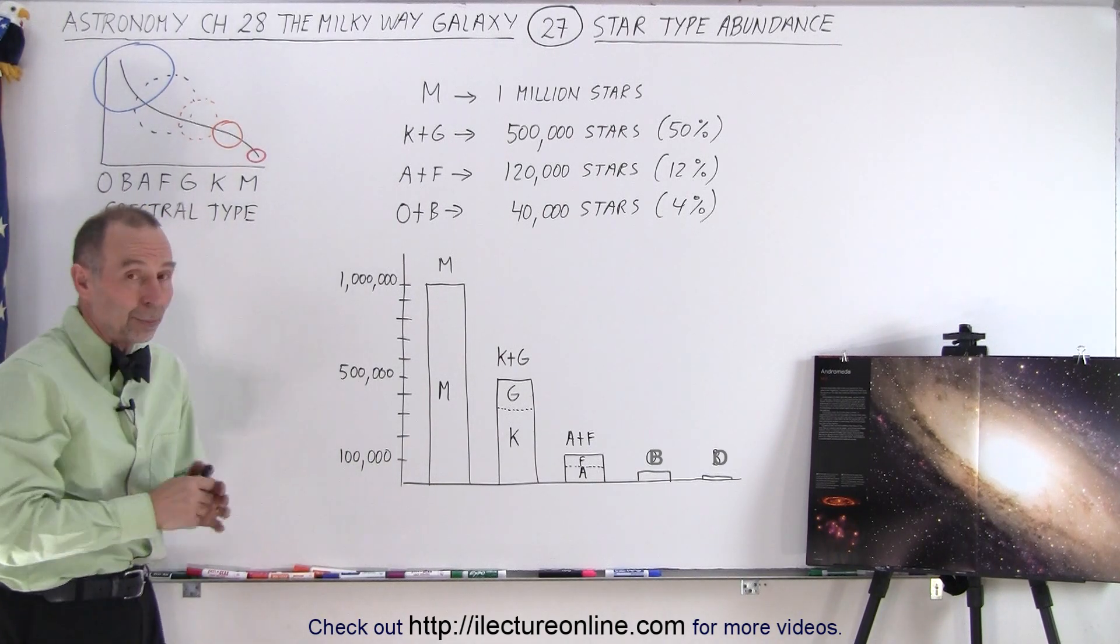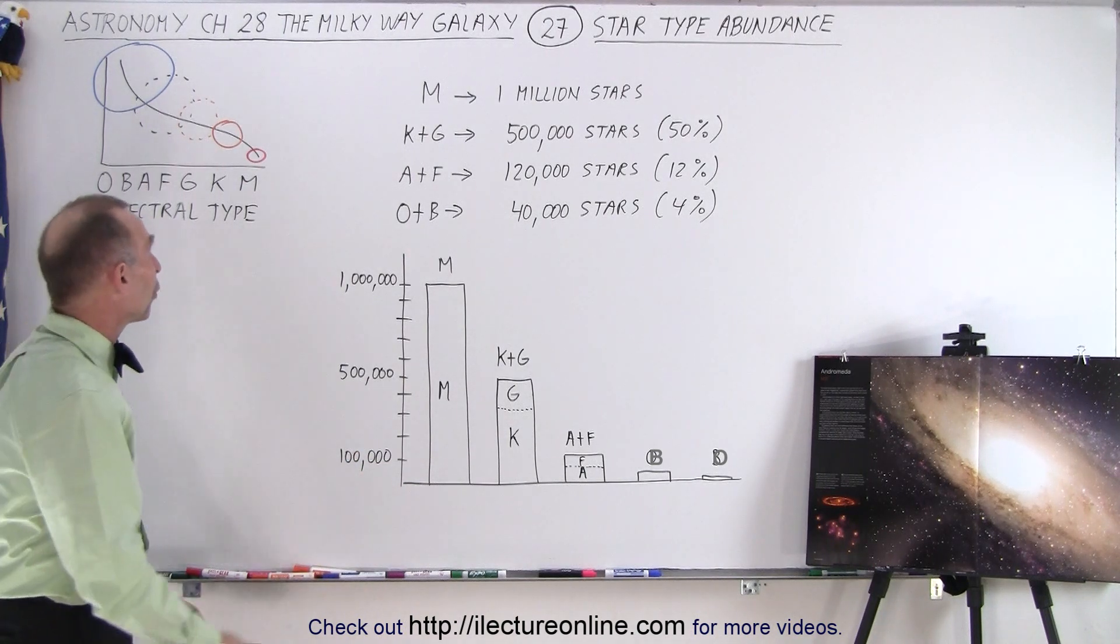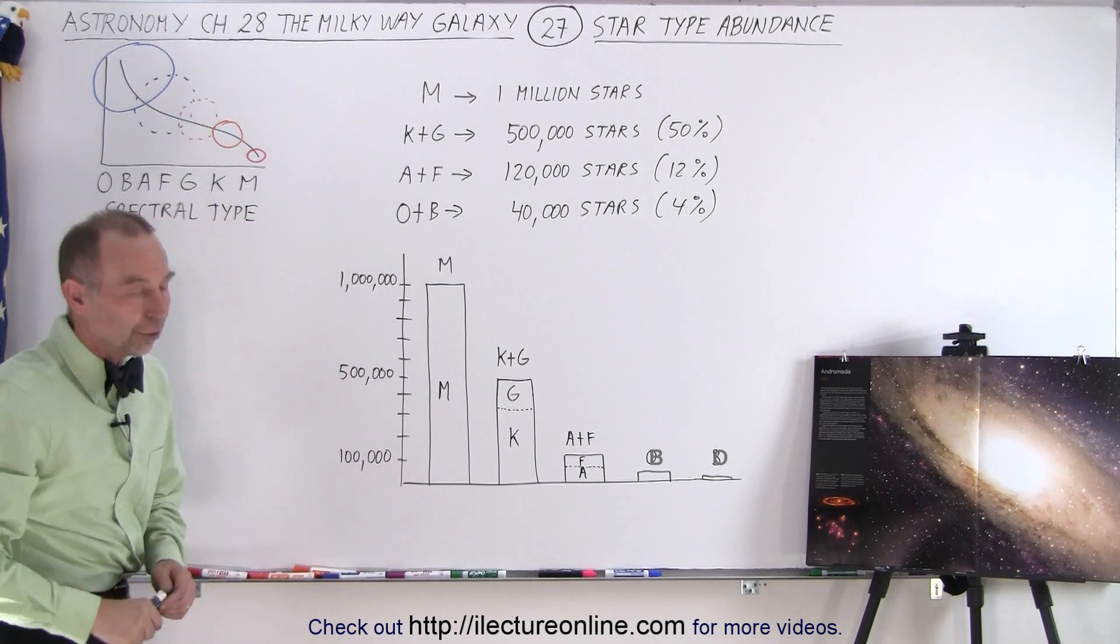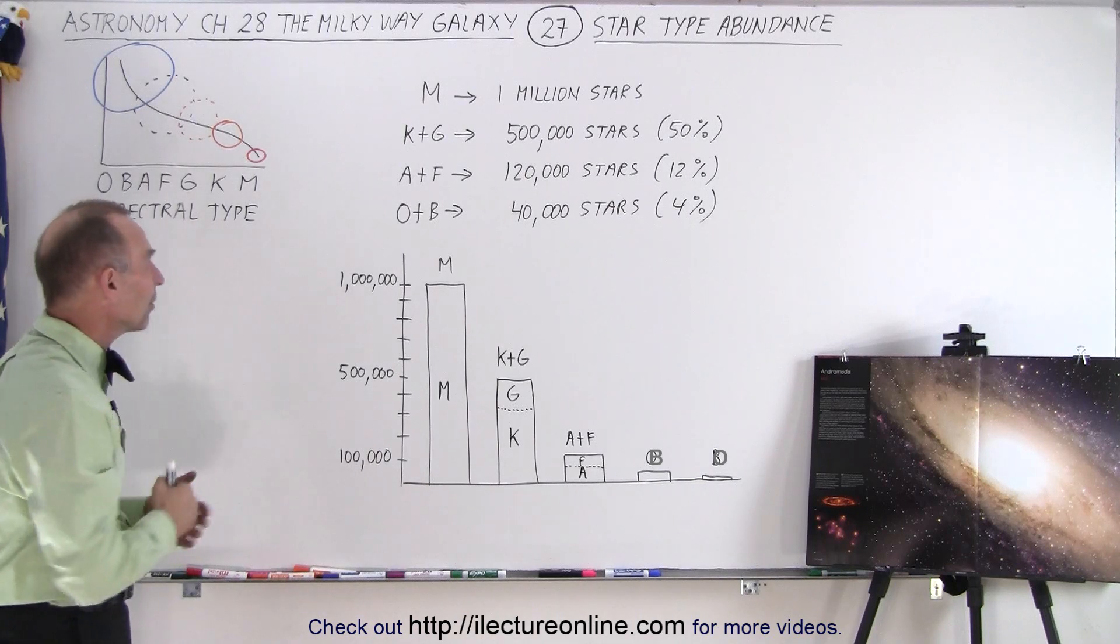By and large, the stars on the HR diagram represent the largest quantity of stars in the galaxy. There's of course a few red giants and a number of white dwarfs. But excluding those, what is the relative abundance of the stars on the main sequence?